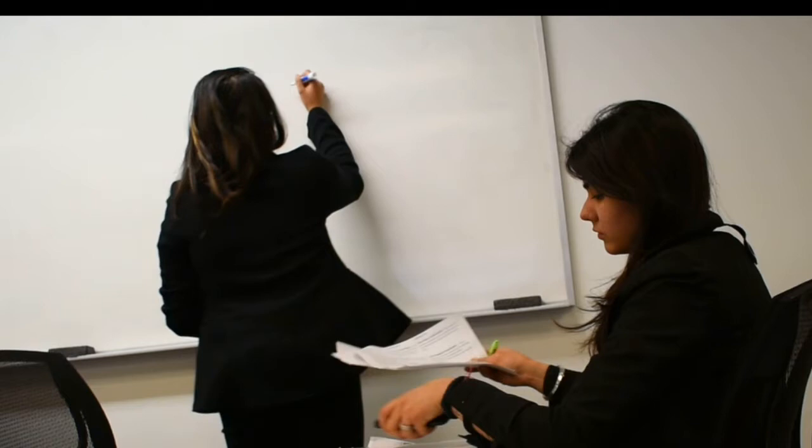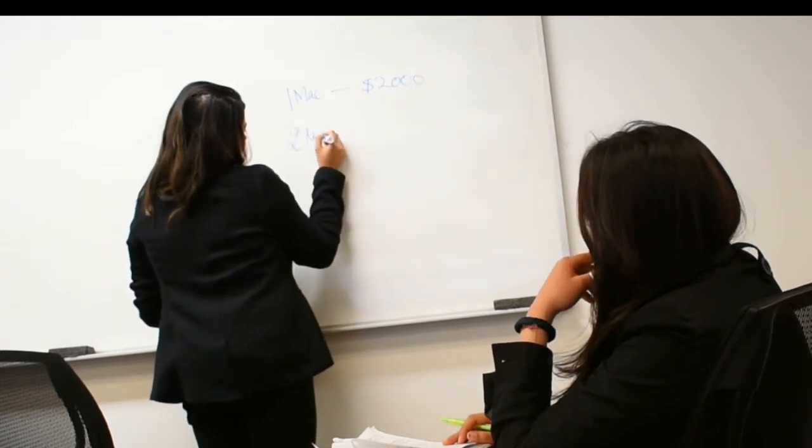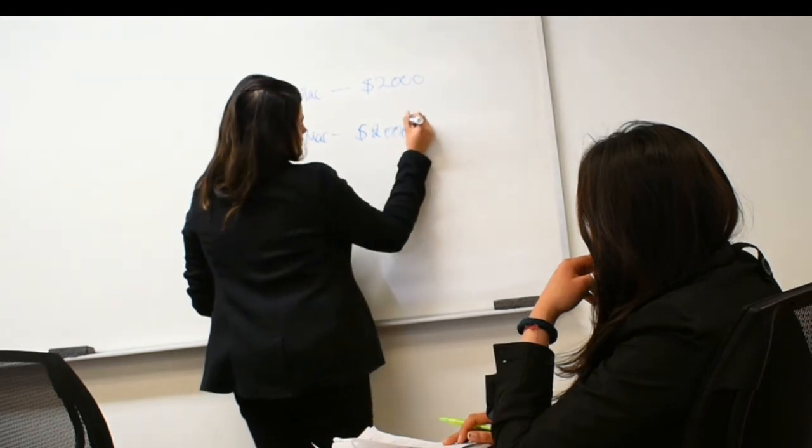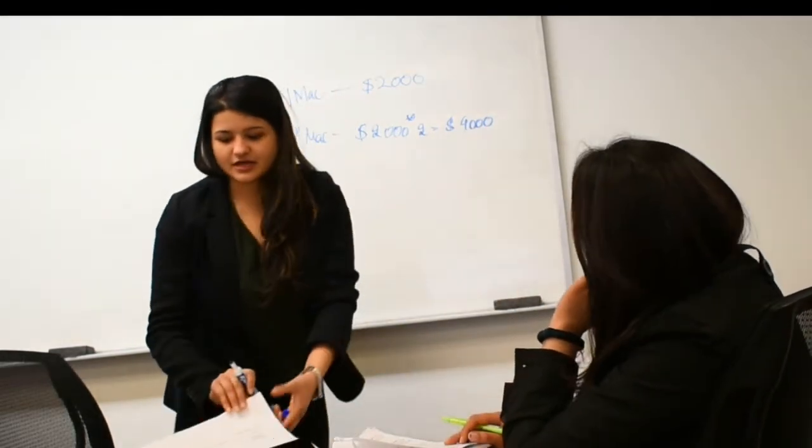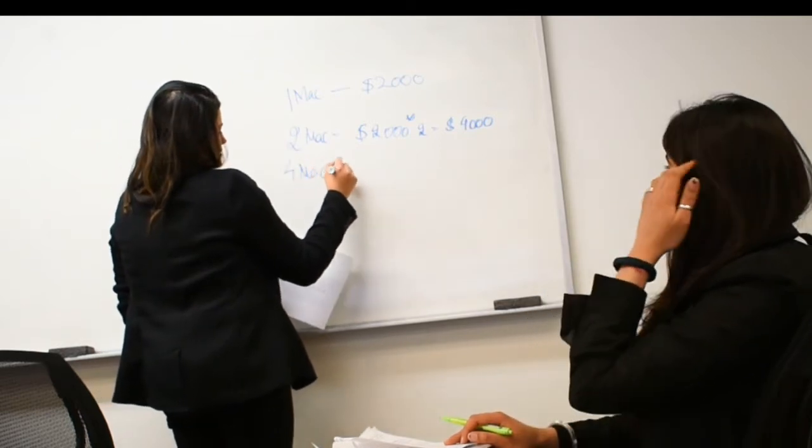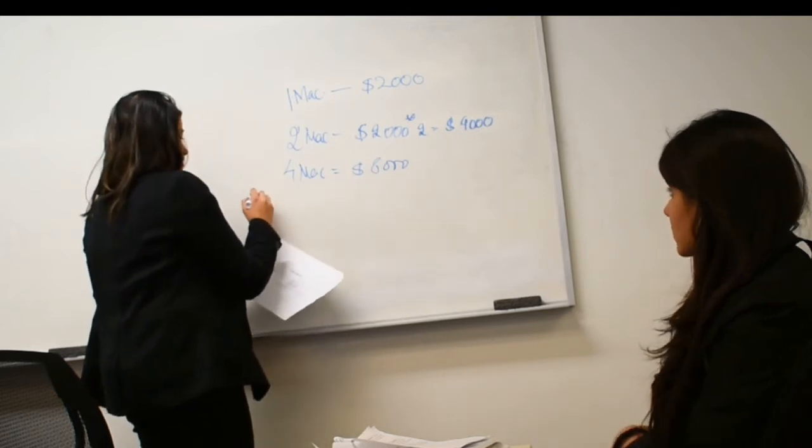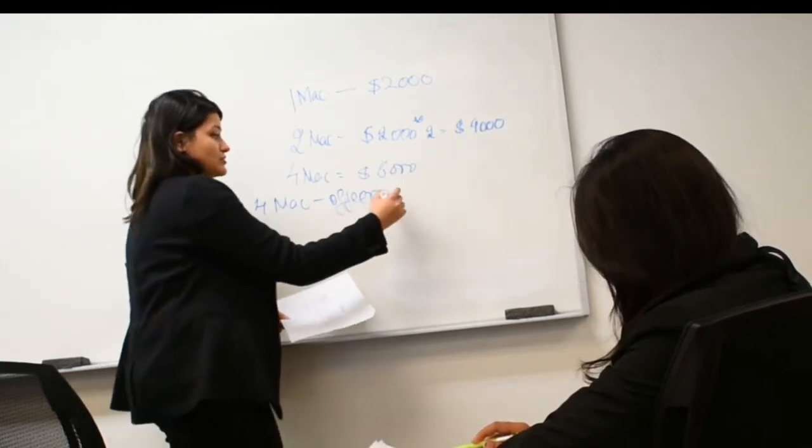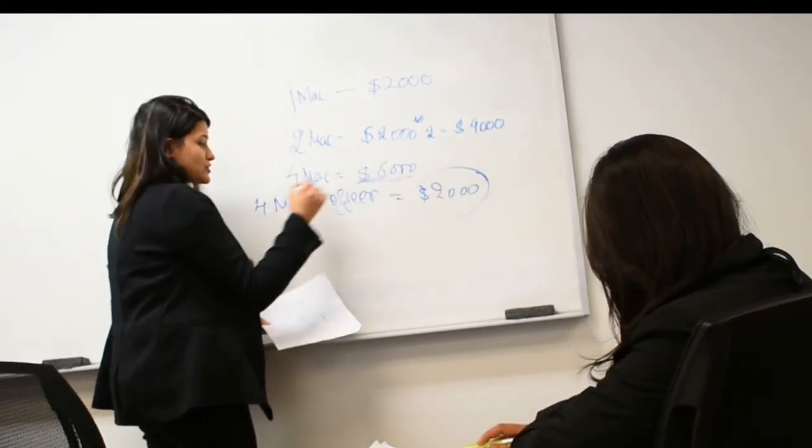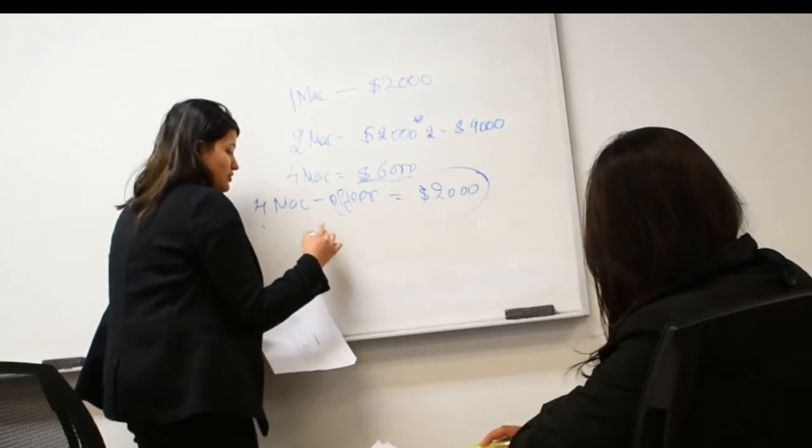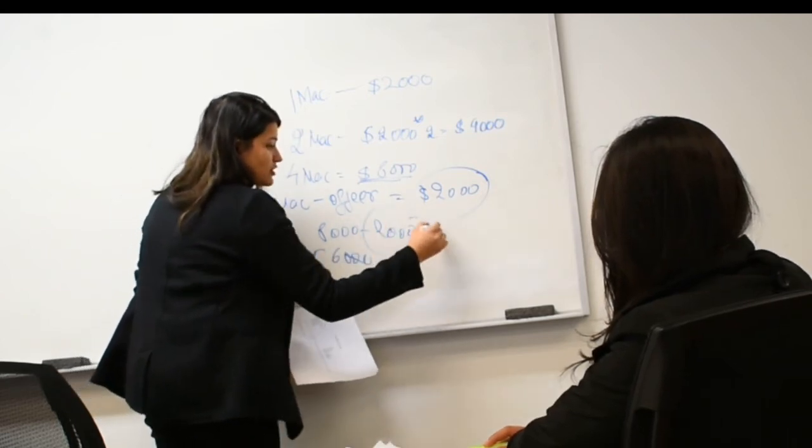So, our one machine will cost you $2,000. Okay. And of course, if you buy two machines, it will cost you $4,000. Yes. And I guess that looks expensive to you. Obviously. But, and of course, for four machines, it will be $8,000. Yes. But, if you buy four machines, our company actually gives you a discount of $2,000 for your first order for four machines. So, that means that instead of spending $8,000 on four machines, you will be getting them for $6,000. So, you're saving $2,000 on four machines.